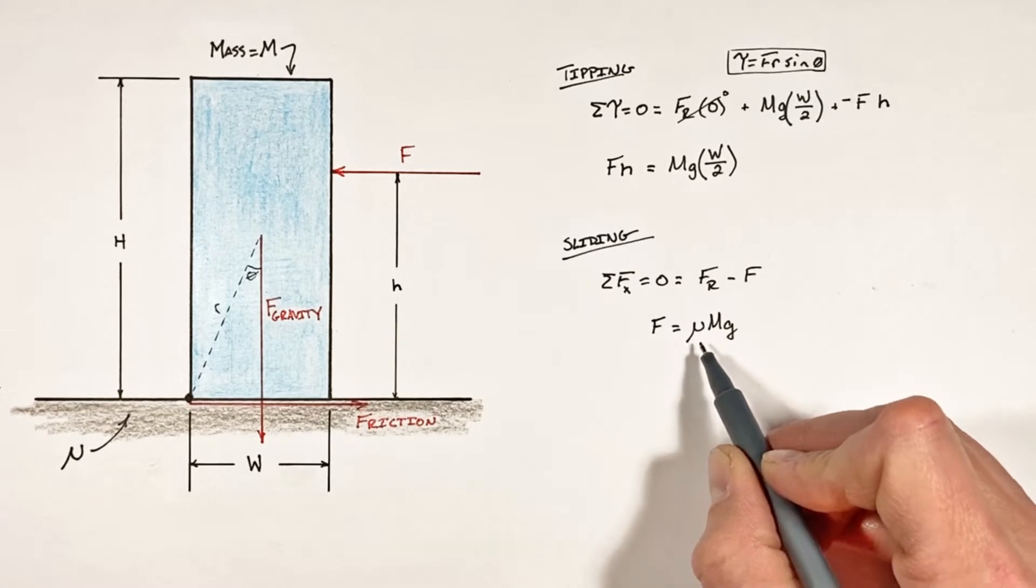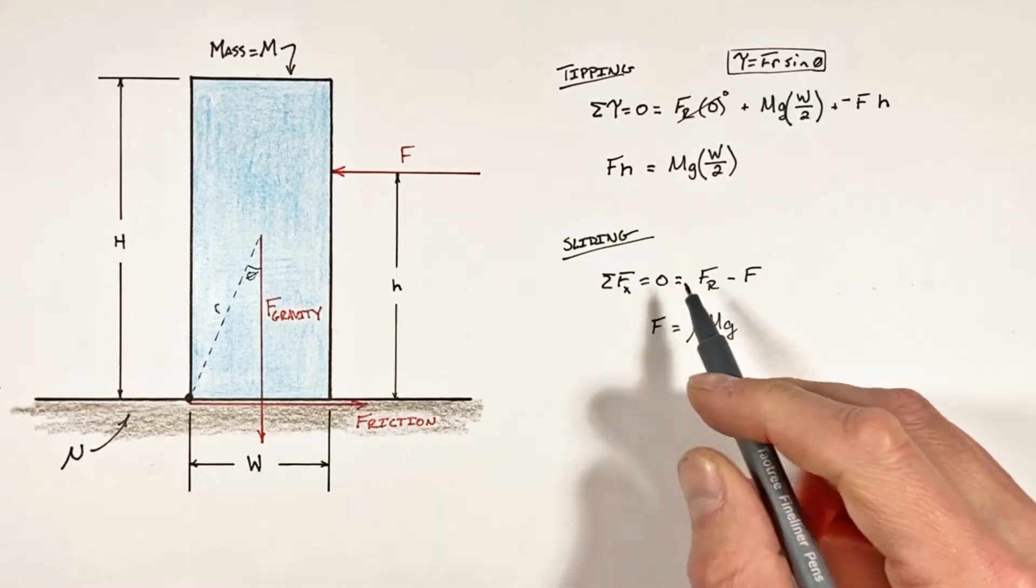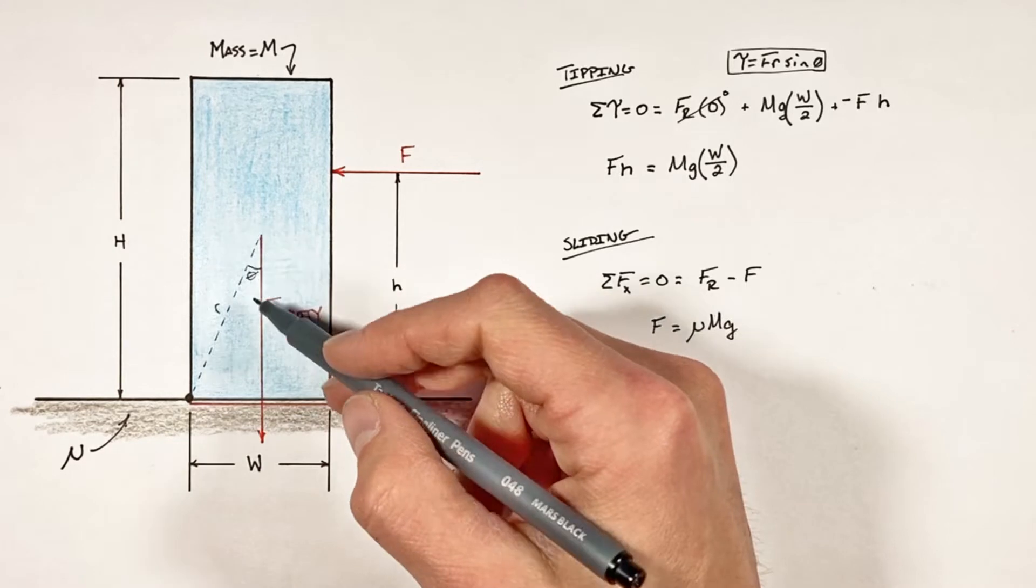So rearranging this we get the push force is equal to the friction force, friction being μ, the coefficient of friction, times mg, the weight of the block.